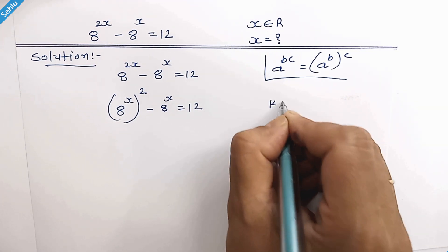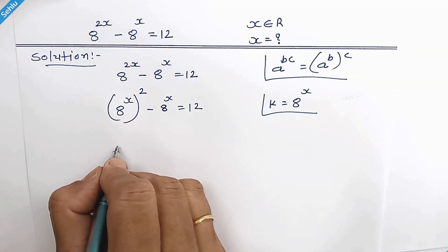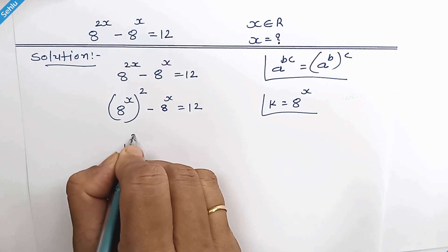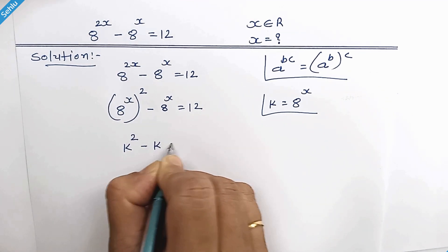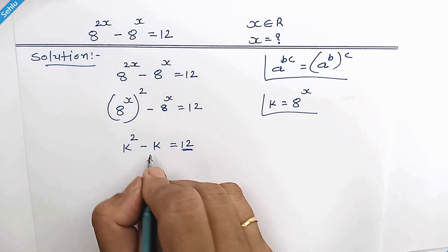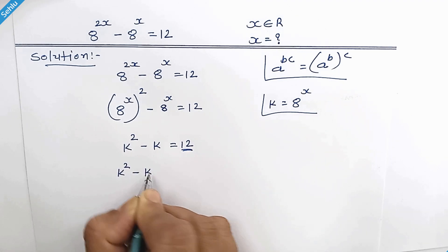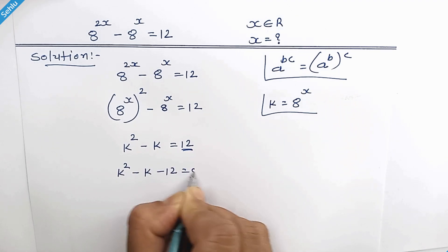Now we are taking k in place of 8 to the power x, so we have k square minus k is equal to 12. Move this 12 here on left hand side. So equation will be k square minus k minus 12 is equal to 0.